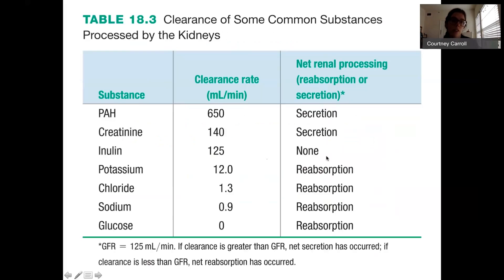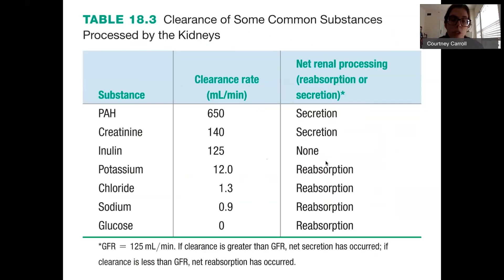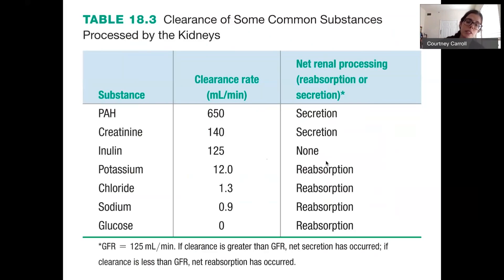These are some typical clearance rates for common substances processed by the kidneys. Inulin is the baseline, telling you your GFR — typically 125 mL per minute. Substances with clearance greater than that, like creatinine and PAH, have been added via secretion from blood into filtrate beyond the original filtration step. Substances with clearance less than that have been reabsorbed — most ions like sodium, chloride, and potassium are almost fully reabsorbed. Glucose should be zero. Sodium and chloride are roughly equal; we'll treat them as equal and calculate just for chloride.